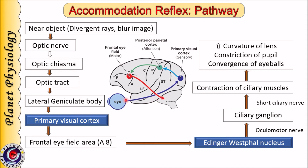From the Edinger-Westphal nucleus, signals go to the ciliary ganglion via the oculomotor nerve, and then to the ciliary muscle through the short ciliary nerve. Contraction of ciliary muscles moves the ciliary body forwards and inward towards the optic axis, decreasing tension on the zonular ligaments so the lens assumes a more convex shape, increasing refractive power and causing clear focusing of the divergent rays on the retina. Contraction of the sphincter pupillae by the oculomotor nerve causes pupillary constriction, and simultaneous contraction of both medial recti leads to convergence of the eyeball.